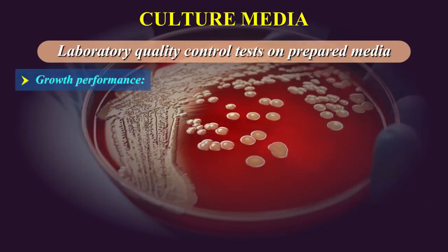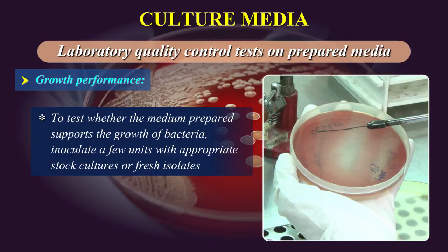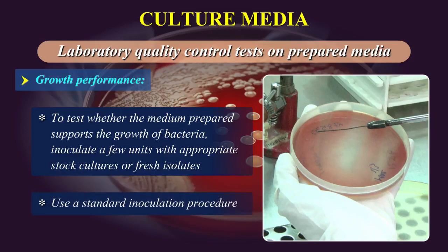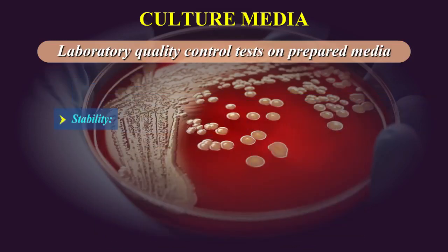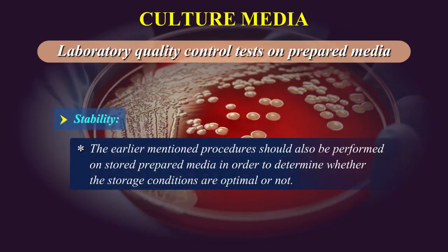Growth Performance: To test whether the medium prepared supports the growth of bacteria, inoculate a few units with appropriate stock cultures or fresh isolates. Use a standard inoculation procedure. For testing new lots or batches of media, inoculate old and new lots together and compare the performance of the two lots side by side. Stability: The earlier mentioned procedures should also be performed on stored prepared media in order to determine whether the storage conditions are optimal or not.